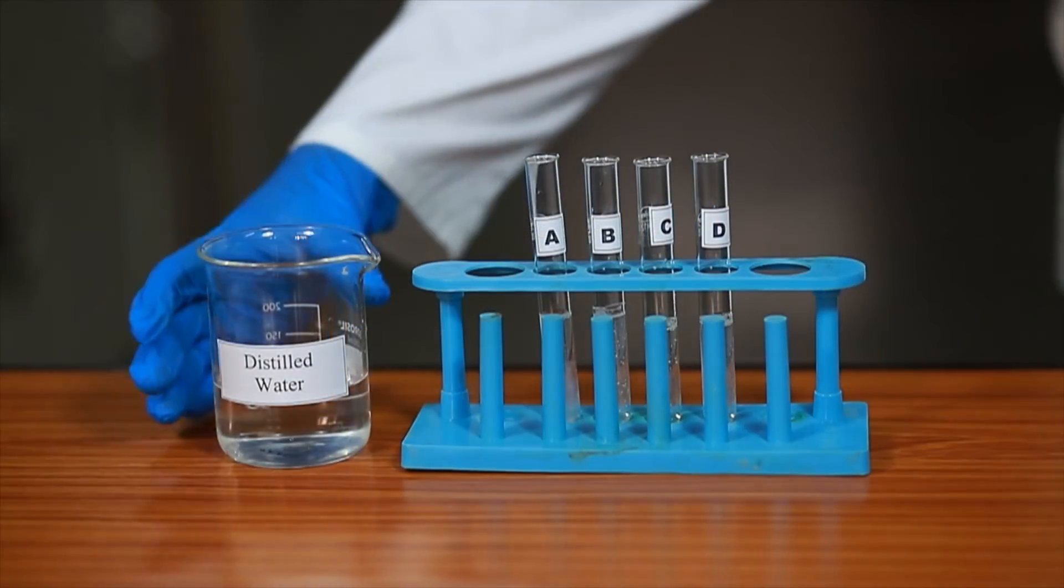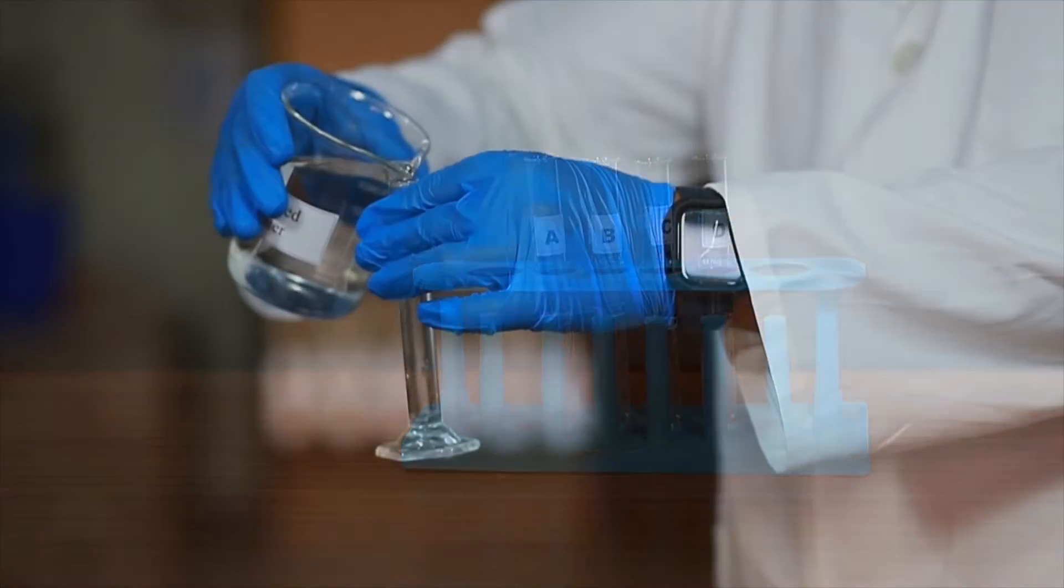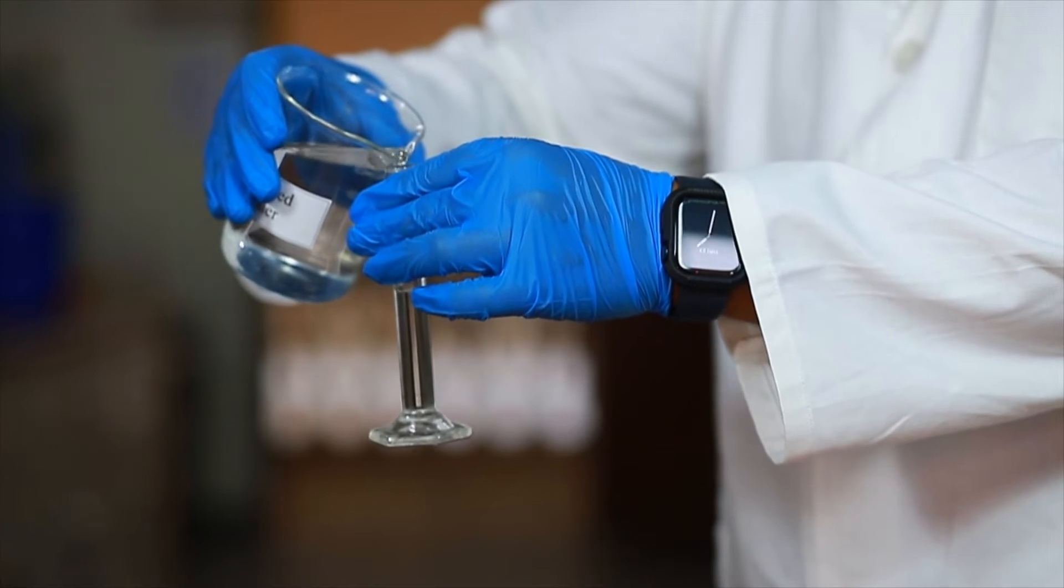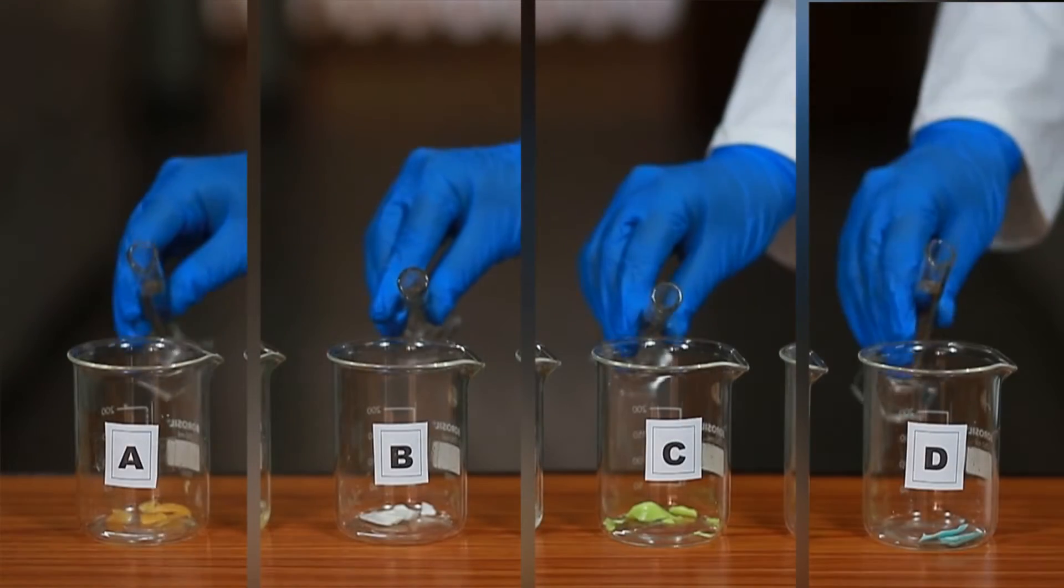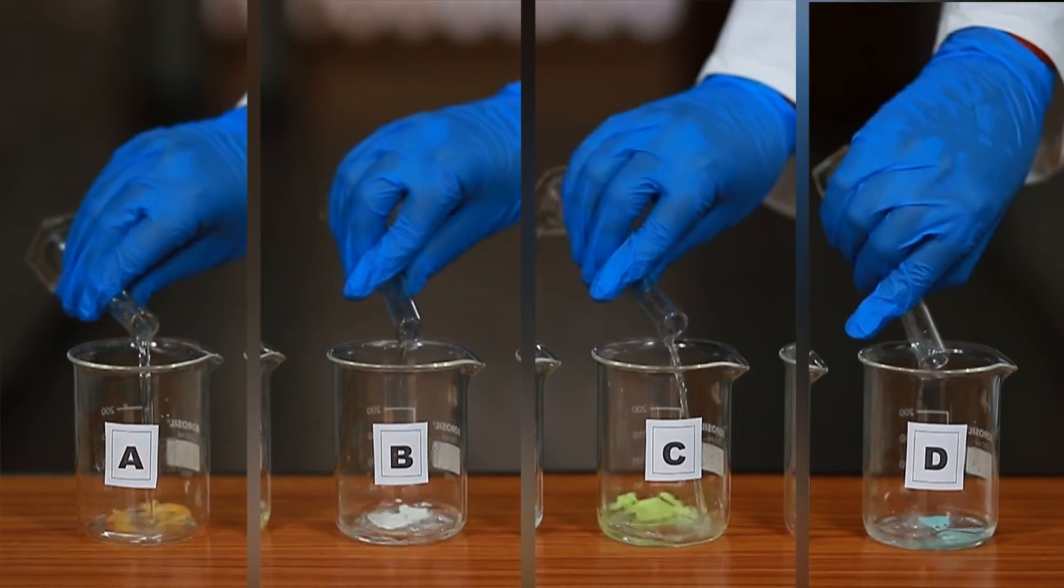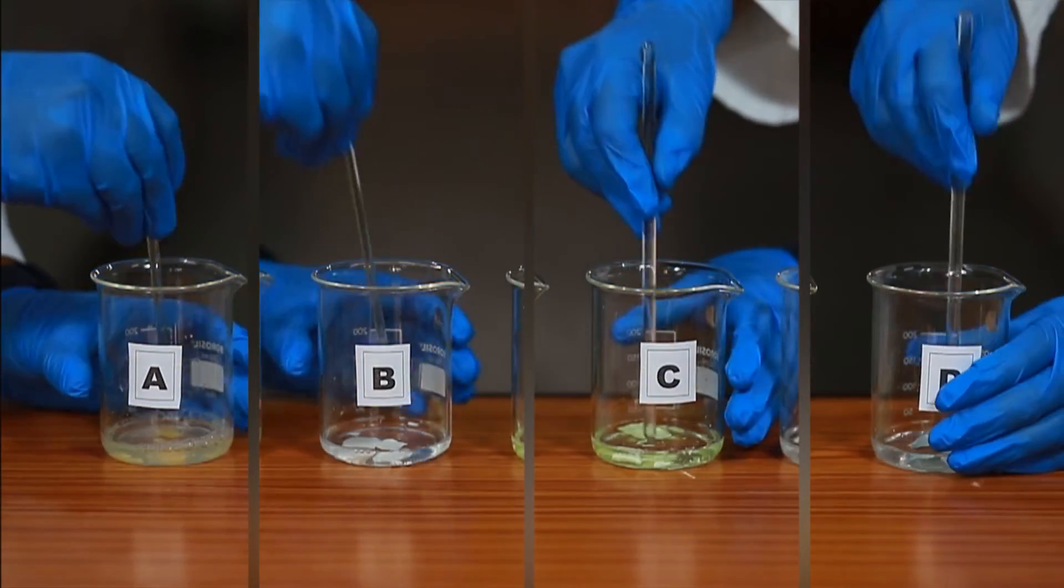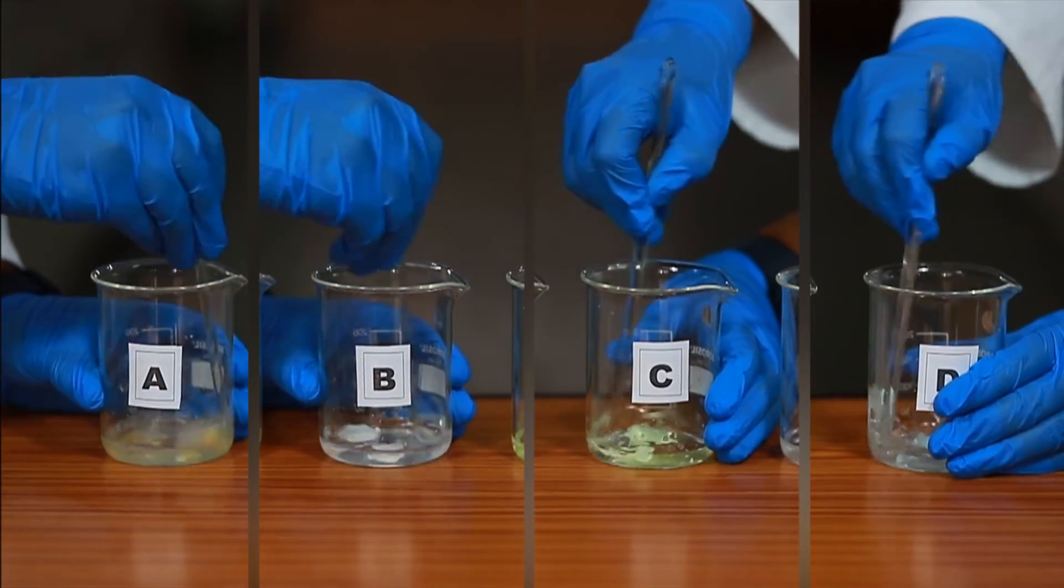Using a measuring cylinder, add 20 ml of distilled water to all the soap samples from the beaker containing distilled water. Dissolve the soap in water by stirring the mixture with a glass rod.